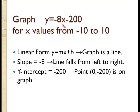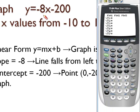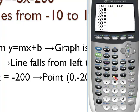So using this zoom 6 standard window will not be helpful. Let's try it anyway and see what we get. We're going to press y equals and enter our equation. So we have negative 8x. Remember use the negative key not the subtraction key. So we have negative 8x minus 200 and we press zoom 6.